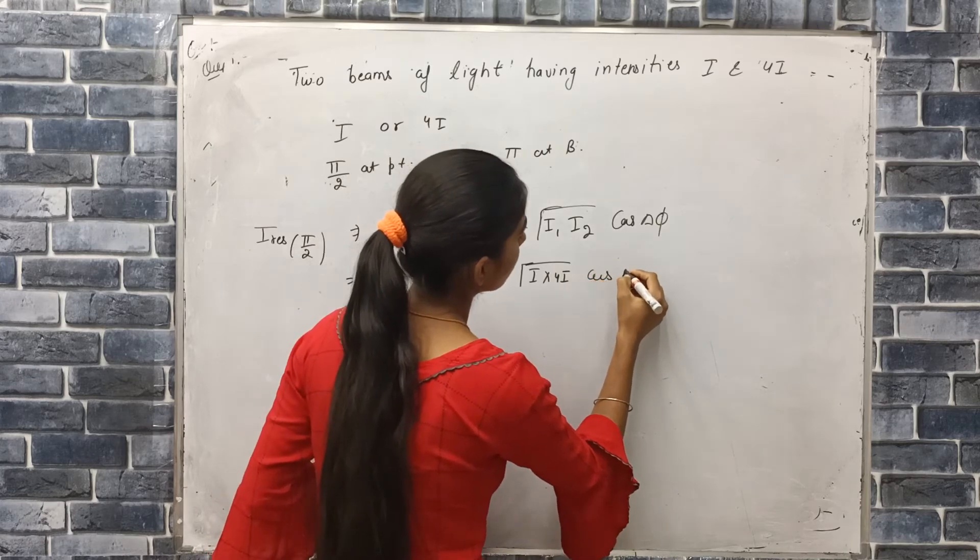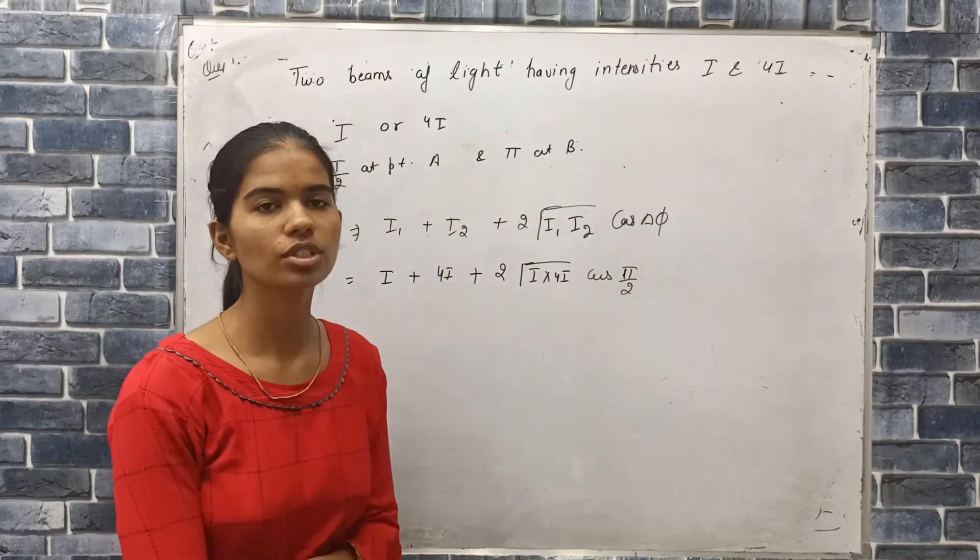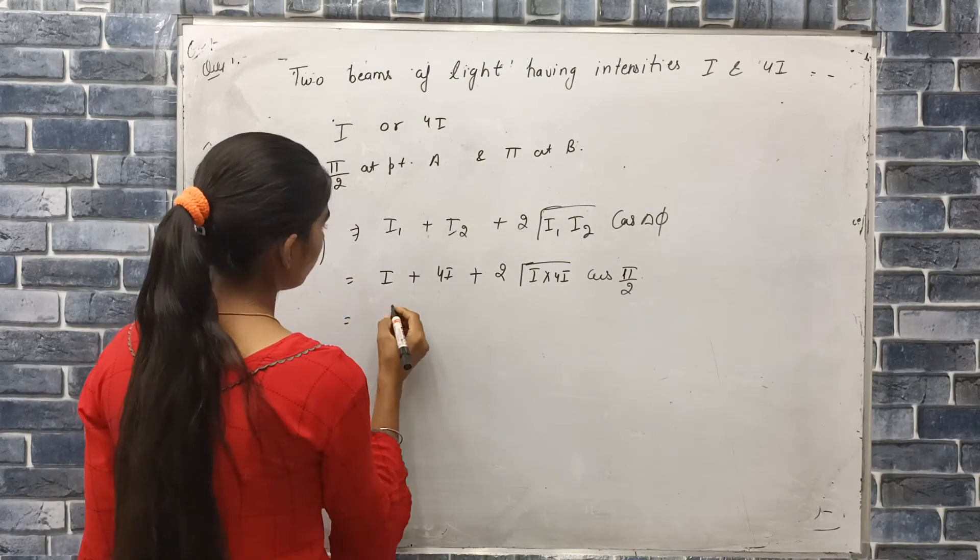Now cos delta is cos π by 2. Cos π by 2 is cos 90.